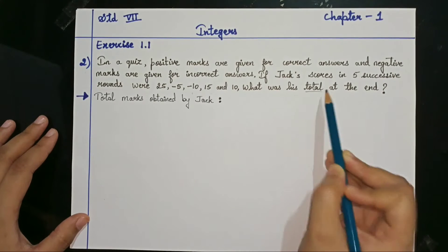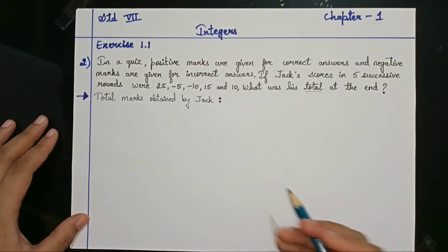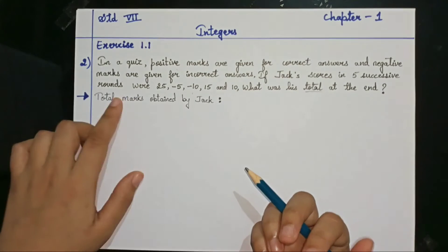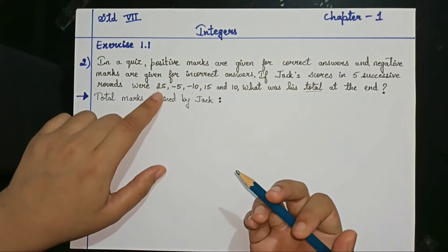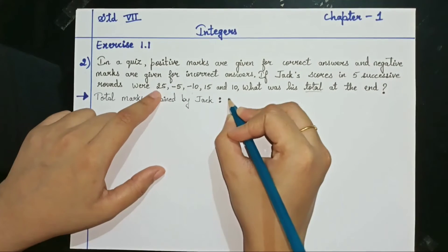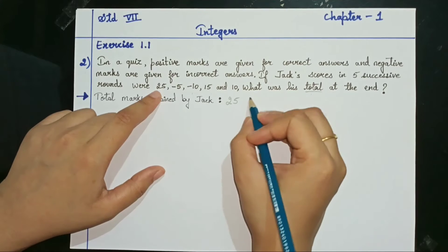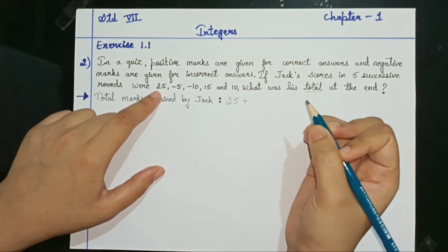So they have asked you to do total of all his marks. Total means you have to do addition. So let us write the total marks of Jack now. In the first round he obtained 25 marks, so since they have asked you to do total, that means you have to put the sign of addition here.